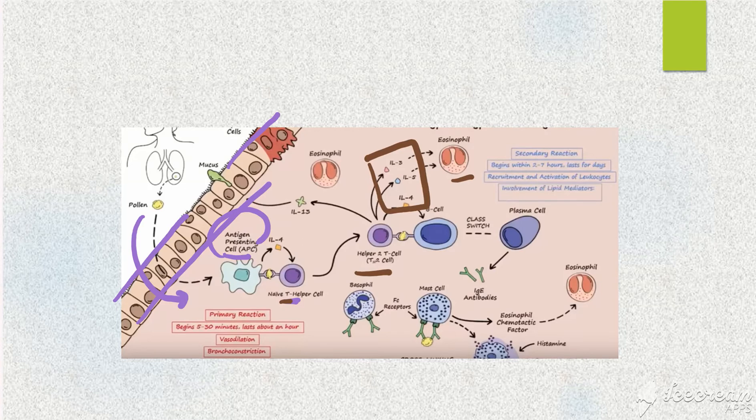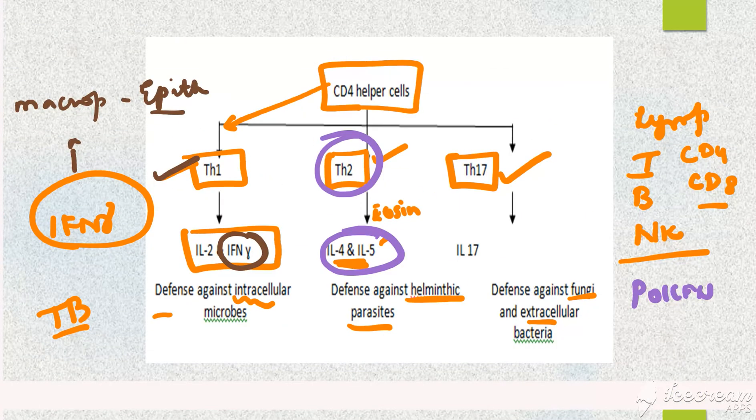Once the person is sensitized, when he is again exposed to the pollen grain he will develop an allergic reaction. Basically it's the T helper cell involved, to be more specific it's the T helper 2 cell.